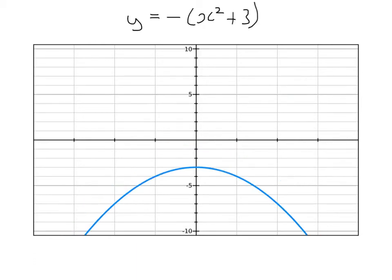Here's the graph of y equals minus x squared plus 3. The graph of just y equals x squared plus 3 looks a little bit like this. So in order to draw the graph of minus x squared plus 3, reflect in the x-axis to get this graph here.